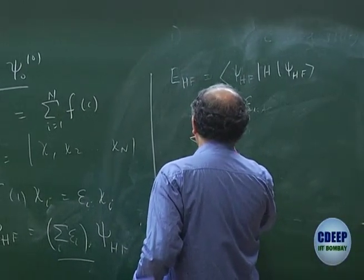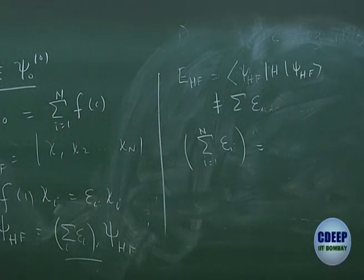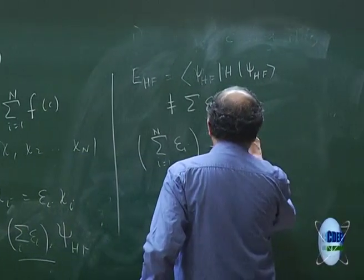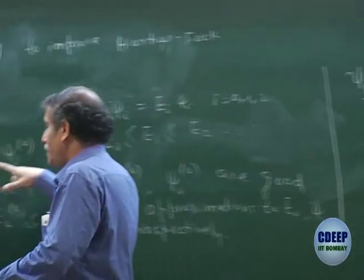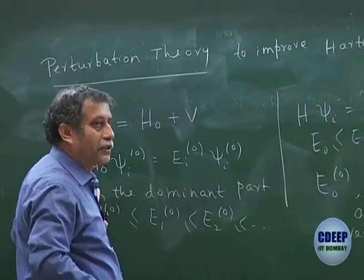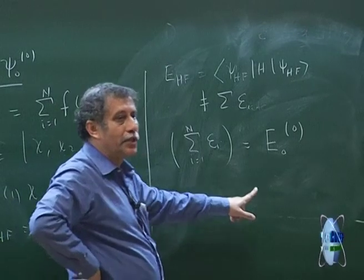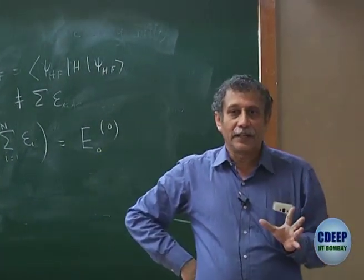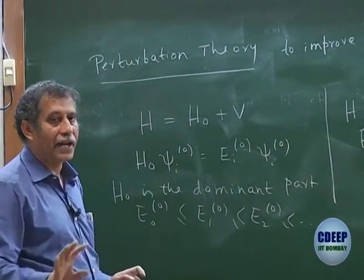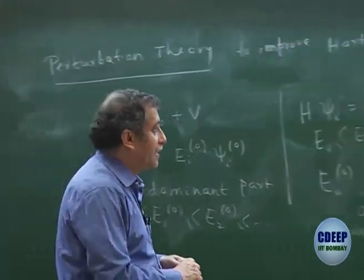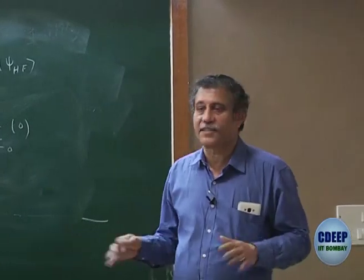So what will I call this quantity? The sum of εᵢ for i = 1 to N is, by my definition, E₀⁰ — because my definition of E₀⁰ is the ground state eigenvalue of H₀. So what is my ground state eigenvalue of H₀? It is Σεᵢ, which is actually E₀⁰. So E₀⁰ is actually not the Hartree-Fock energy, unfortunately.